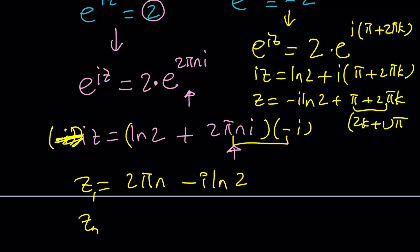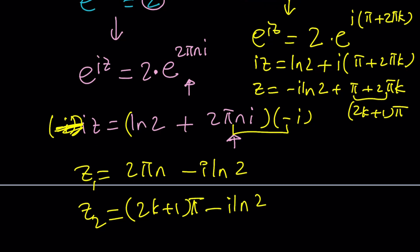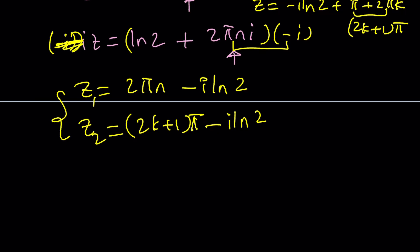So, z sub 1 and z sub 2, maybe we can kind of write them separately. 2k plus 1 multiplied by pi minus i ln 2. So, the minus i ln 2s do not change. And, you know, guess what this does? Kind of splits it off into two branches, but it's not necessary. Let me show you.